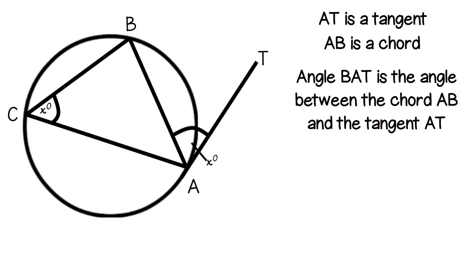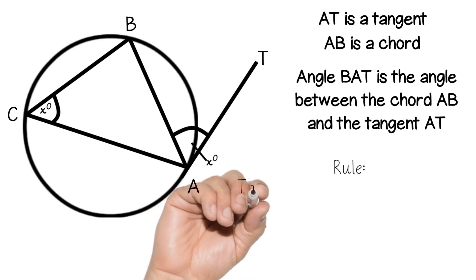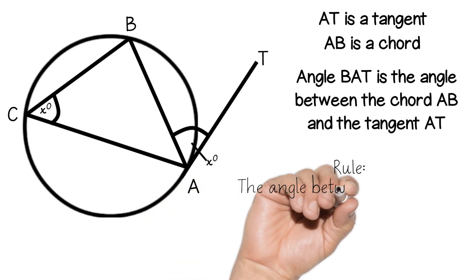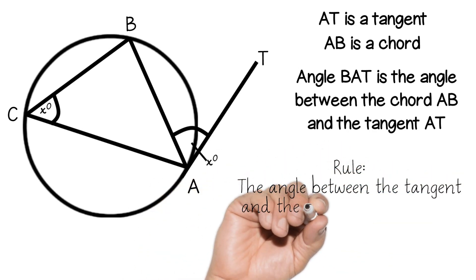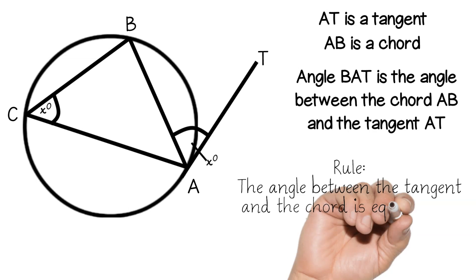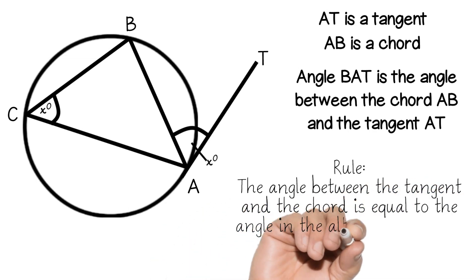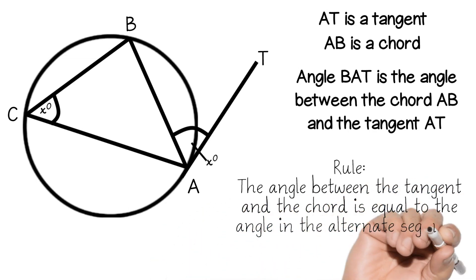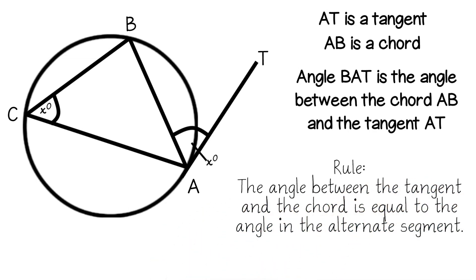The official rule is that the angle between the tangent and the chord is equal to the angle in the alternate segment. The angle between the tangent and the chord AB is equal to the angle in the triangle, but the opposite angle.